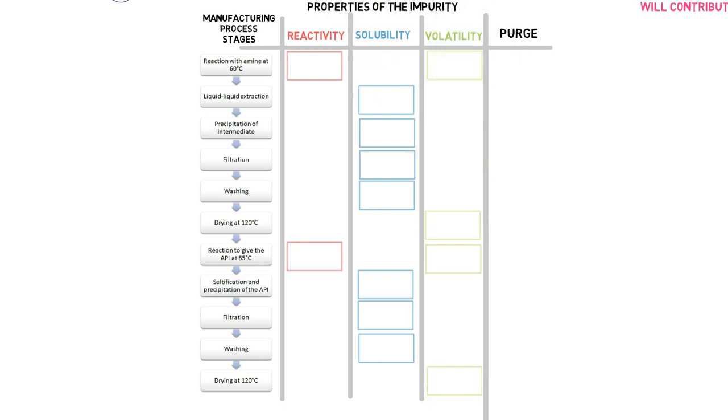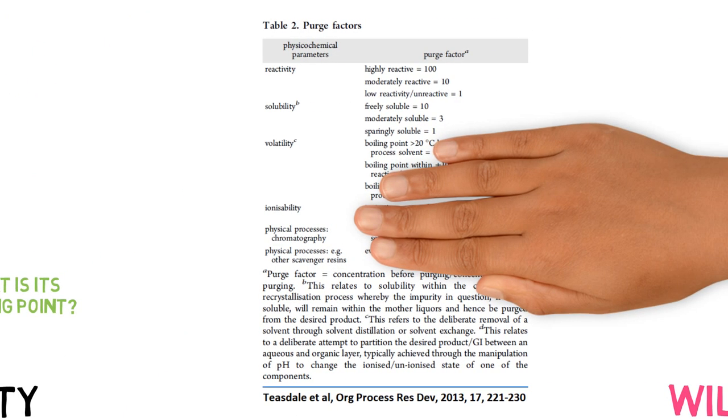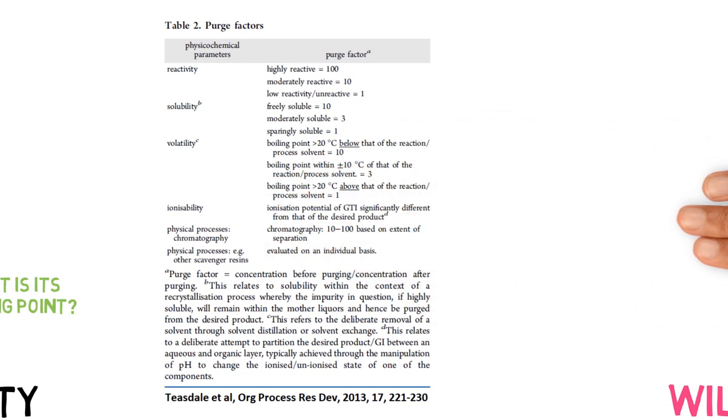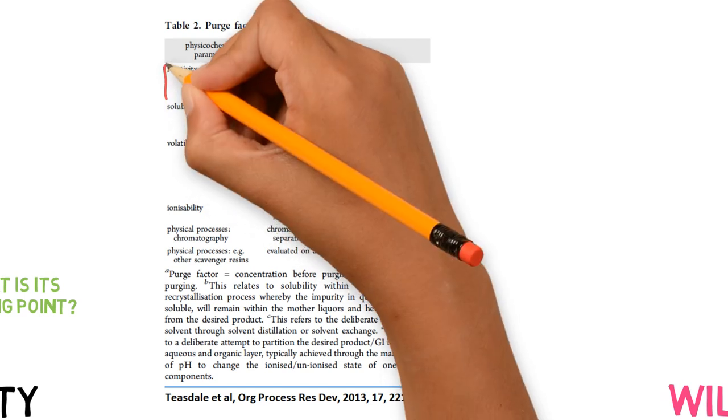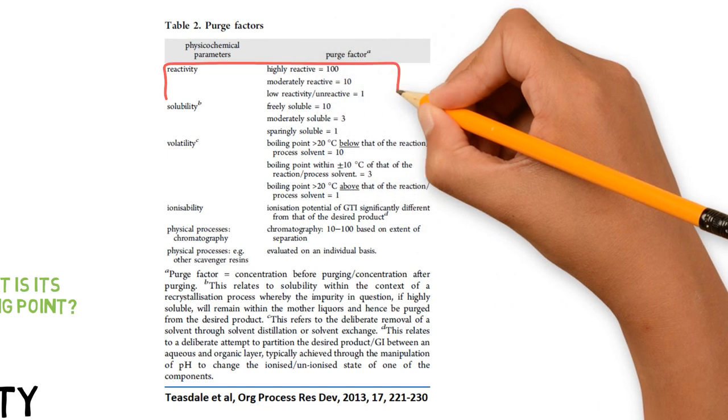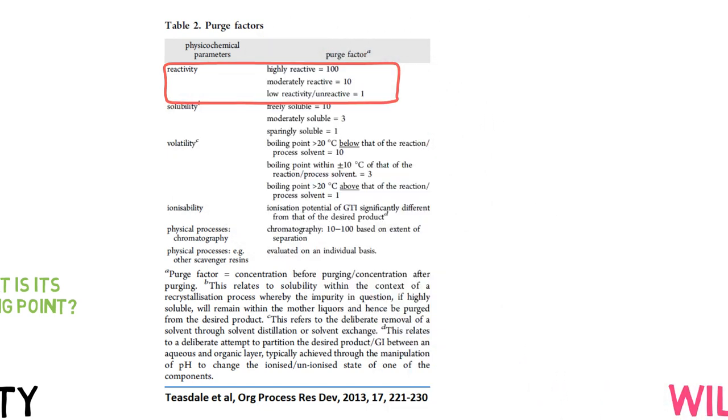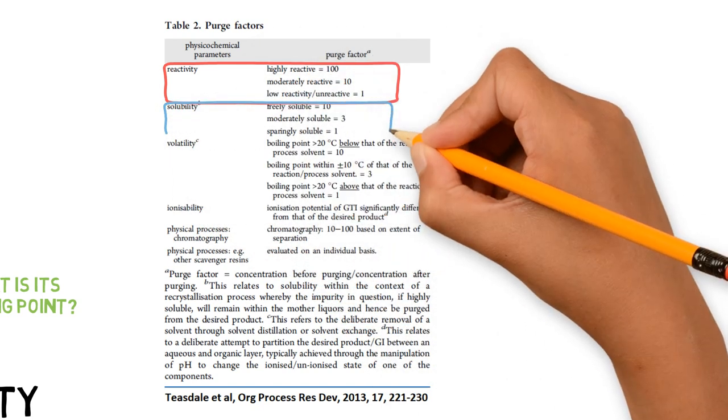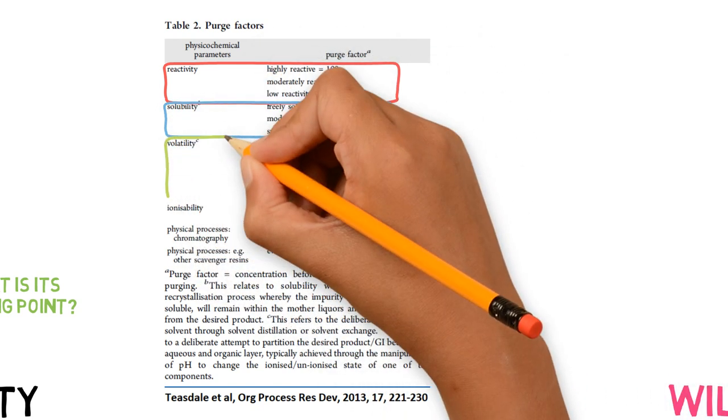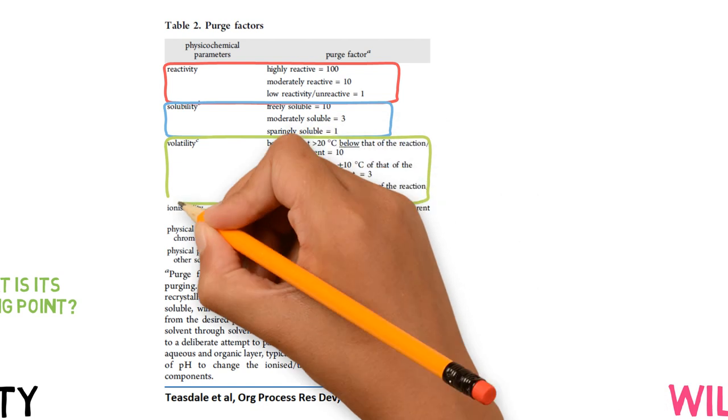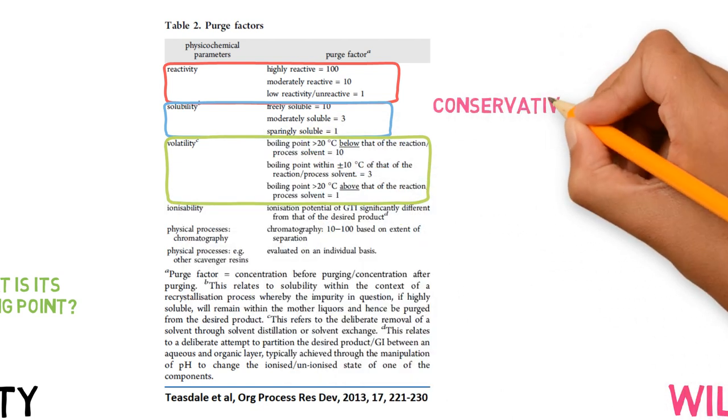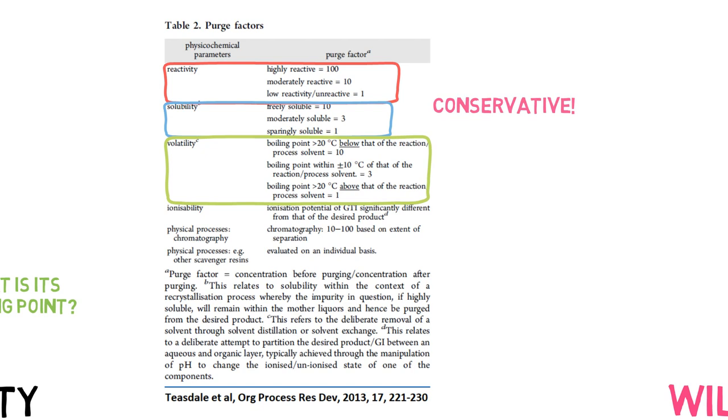And which factor can be attributed to each purge? Some recommended values have been published by Andrew Tisdale and colleagues in this paper and have been used by the pharmaceutical industry in the calculation. According to this publication, when a stage can purge the impurity through reactivity, the highest factor that can be given is 100. For solubility and volatility, the highest is 10. This shows how conservative the calculation is, which explains its acceptance by regulators.